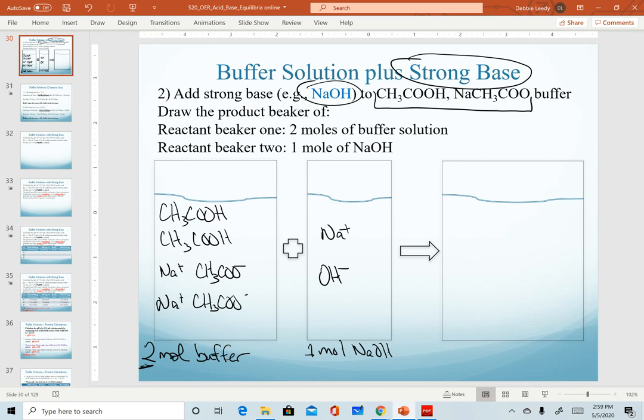So we can transfer over our spectator ions. We know that the three sodiums in these two beakers are just going to transfer over. They're not going to react with anything. They're all neutral spectators. We want to know when we add our sodium hydroxide to our buffer solution, what is going to react. Obviously, the sodium is not, so we need to figure out what is hydroxide going to react with.